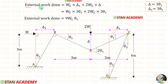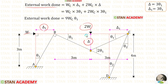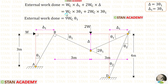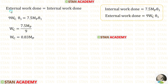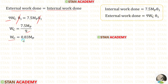Now let us find the external work done. We multiply load W by sway displacement delta 1 and add load 2W multiplied by beam displacement delta. Substituting delta 1 equals 3 theta 1 and delta equals 3 theta 1 and adding gives the external work done equal to 9WC·theta 1. Equating with internal work done, eliminating theta 1 and dividing by 9 gives WC equal to 0.83MB.